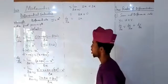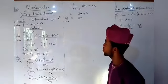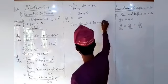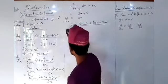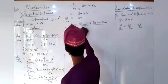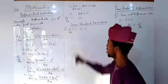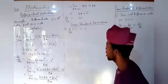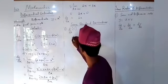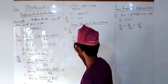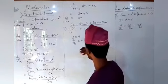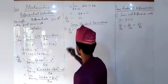That shows how we apply the first principle formula. We also have some standard derivatives. Number one: the derivative of a constant gives us zero. A constant is a number without any variable, like 2, 3, 4, 5. For instance, if y equals 4 and you want to find dy/dx, then dy/dx is simply zero, because the derivative of a constant is zero. It might be y equals 2 or y equals 10 — dy/dx of that will be zero.